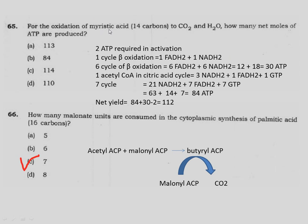After complete beta-oxidation of myristic acid, you get 7 acetyl CoA, which enters the citric acid cycle. Each turn gives 3 NADH, 1 FADH2, and 1 GTP (equal to 1 ATP). For 7 acetyl CoA: 21 NADH gives 63 ATP, 7 FADH2 gives 14 ATP, and 7 GTP gives 7 ATP — total 84 ATP from citric acid cycle. Net yield: 84 + 30 − 2 = 112 ATP. There is no option for 112; I verified from the book and it is 112.